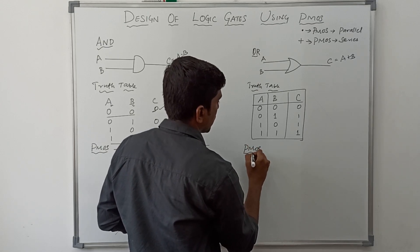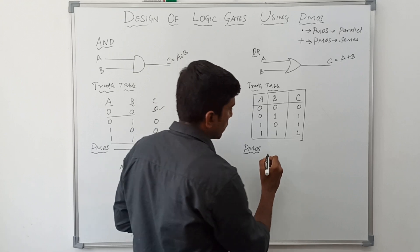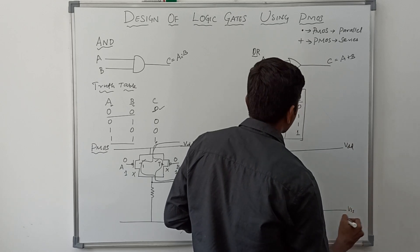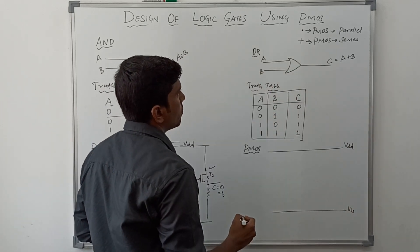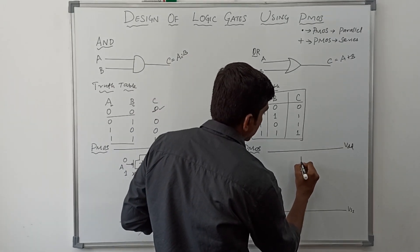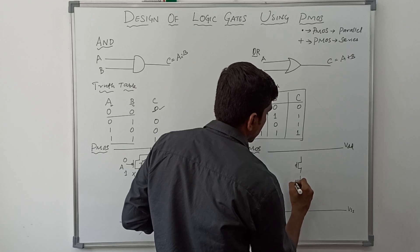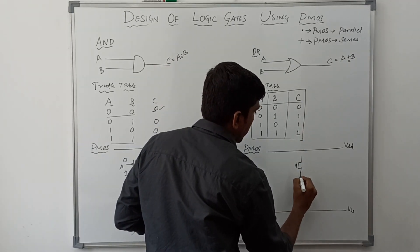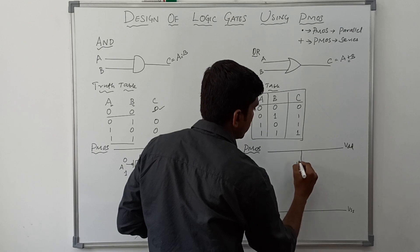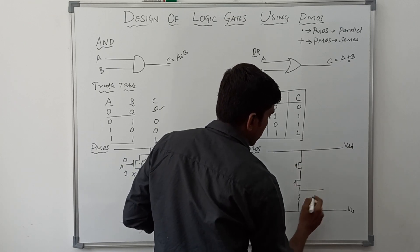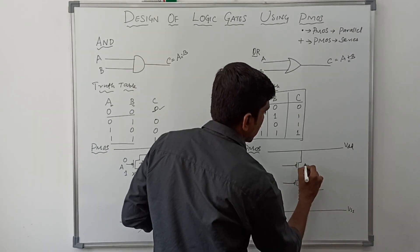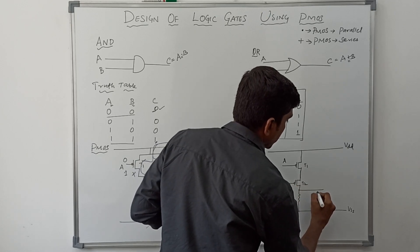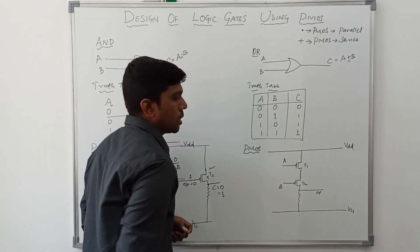Now I am going to design the PMOS structure of OR gate. As usual, I first draw the power supply lines VDD and VSS. In this OR gate we also have two variables, so we need two transistors. Since the boolean expression contains a plus operator, the PMOS transistors are connected in series. There is a pull-down resistor. Input of T1 is A, input of T2 is B. Output is taken between the pull-up and pull-down network.